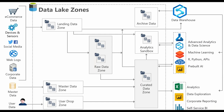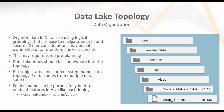Finally, we recommend having an archive data zone. Typically within your data warehouse you may have a purge policy — for example, keeping six years of history. Instead of deleting that data, we recommend loading it into an archive data zone within the data lake and then using external tables and PolyBase to enable users to query that archive data directly in the data lake through the relational database.